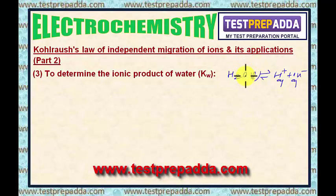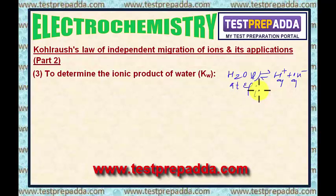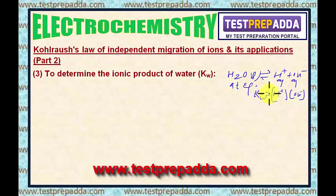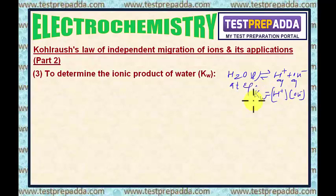In pure water, the concentration of H⁺ will be equal to the concentration of OH⁻. At equilibrium, I can write K = [H⁺][OH⁻], and for this dissociation it is known as Kw — the dissociation constant of water, or better, the ionic product of water. With the help of a question, I will try to find the value of Kw.